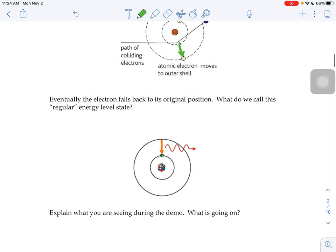Eventually the electron falls back to its original position. It kind of says, wait a second, what am I doing up here? I'm supposed to be closer to the nucleus. So it falls back down to the traditional, normal, regular energy level state that we call the ground state.